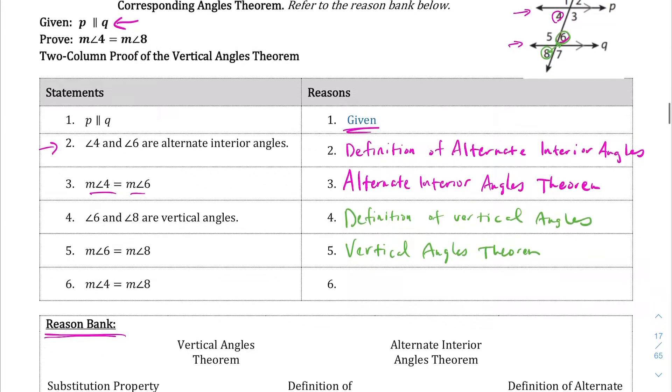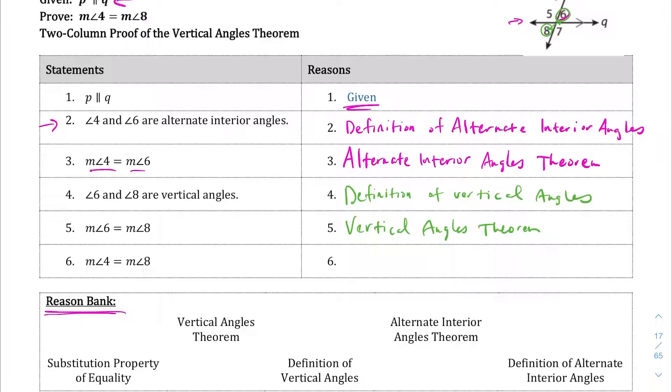And 6 being equal to 8, well that's just the vertical angles theorem. And lastly, we can conclude that the measure of angle 4 is equal to the measure of angle 8. Let me write it out for us. We've already established that measure of angle 4 is equal to measure of angle 6, which is also equal to measure of angle 8. If we just remove that and substitute, we have that statement. So we can say that this is true because of the substitution property of equality.